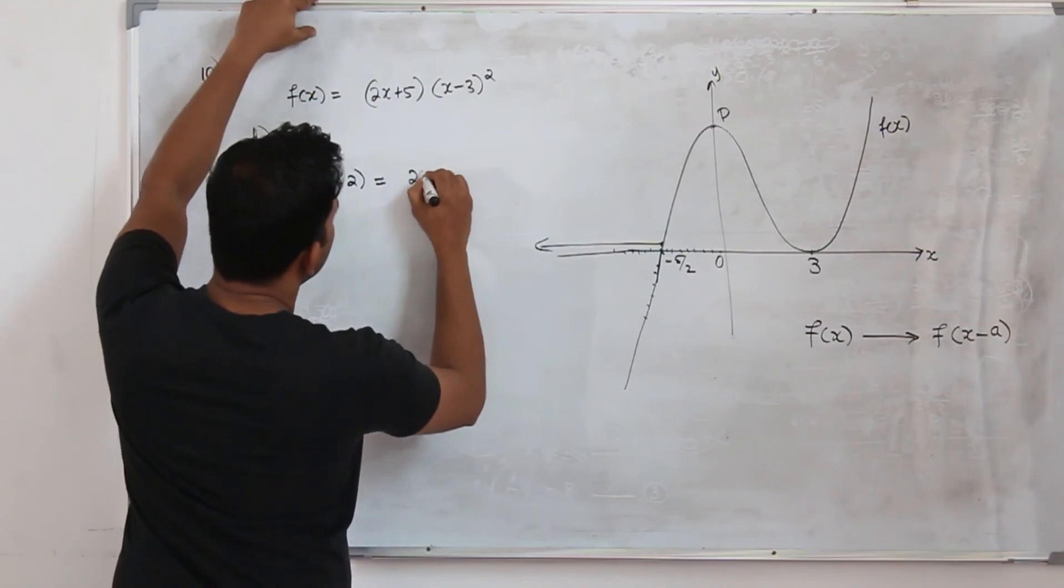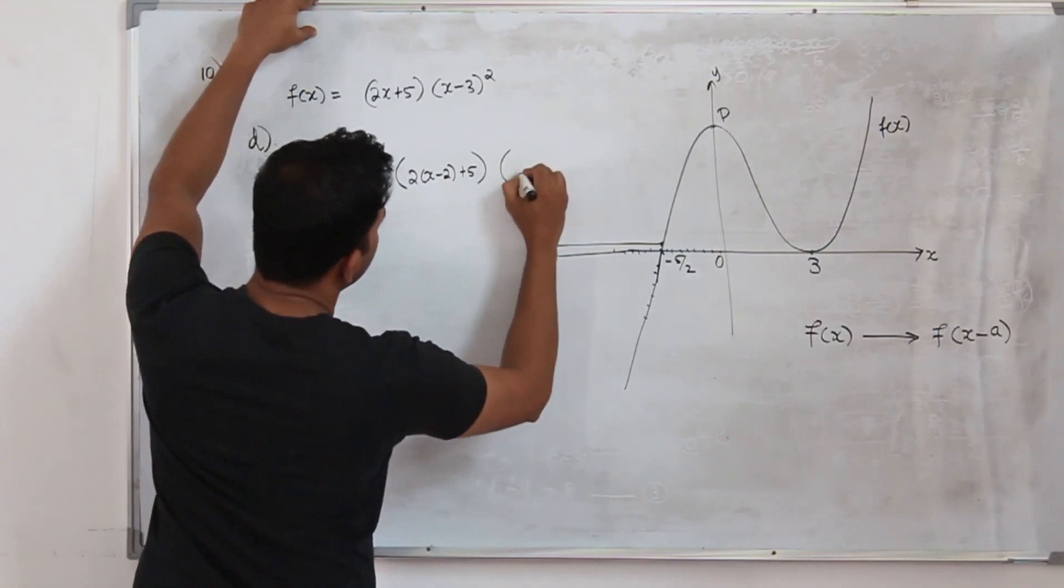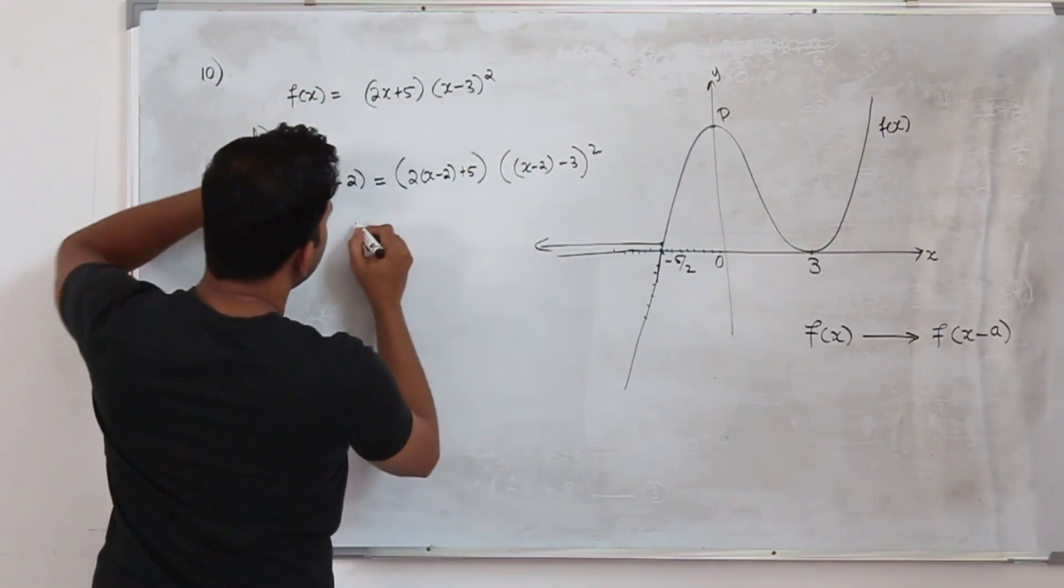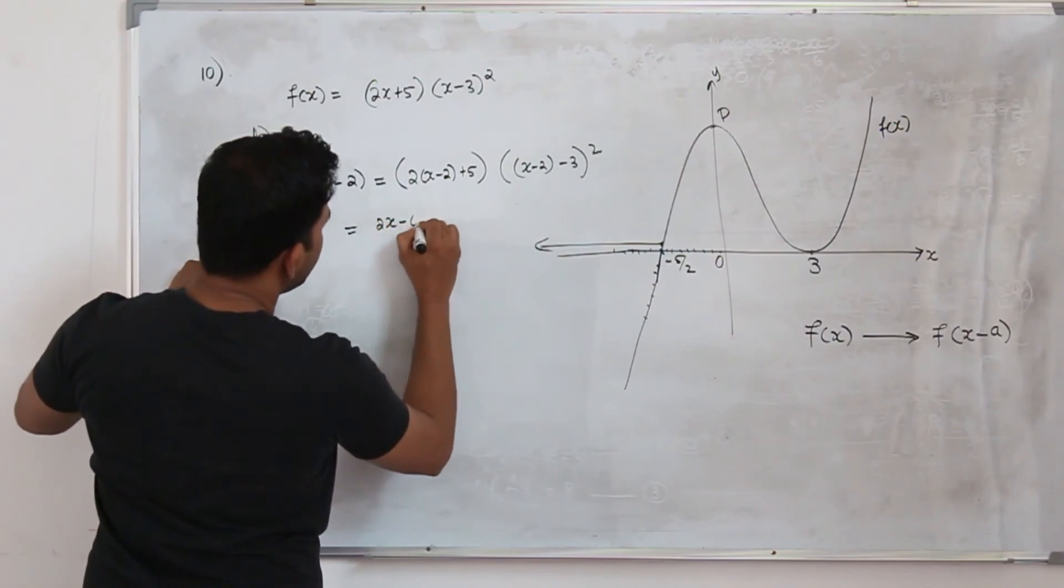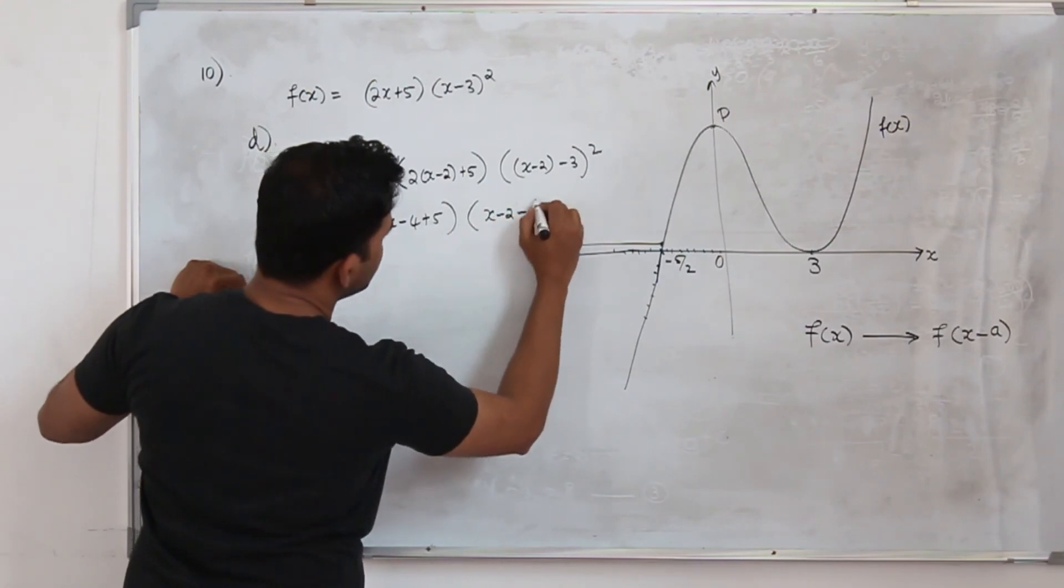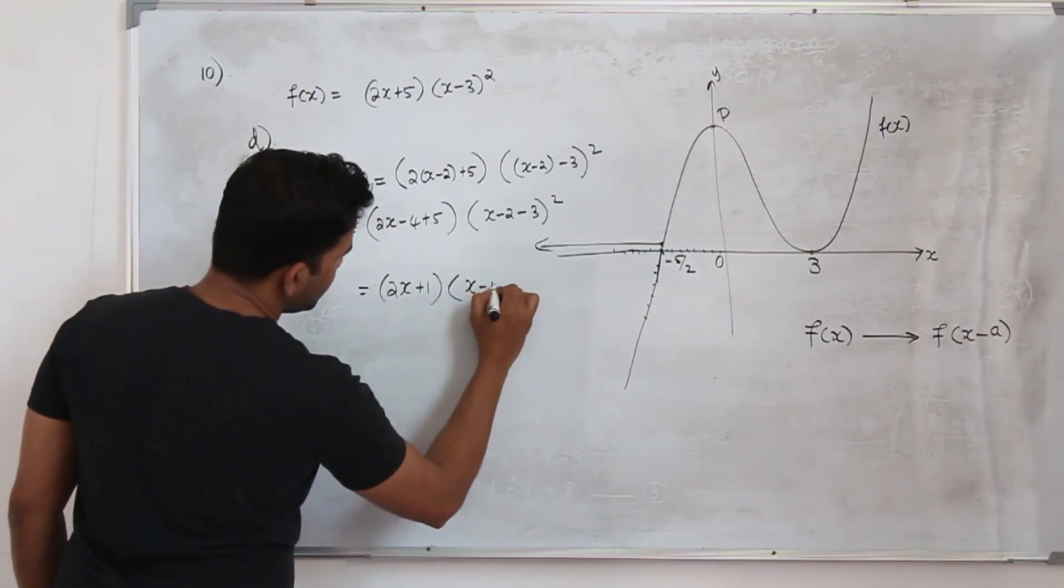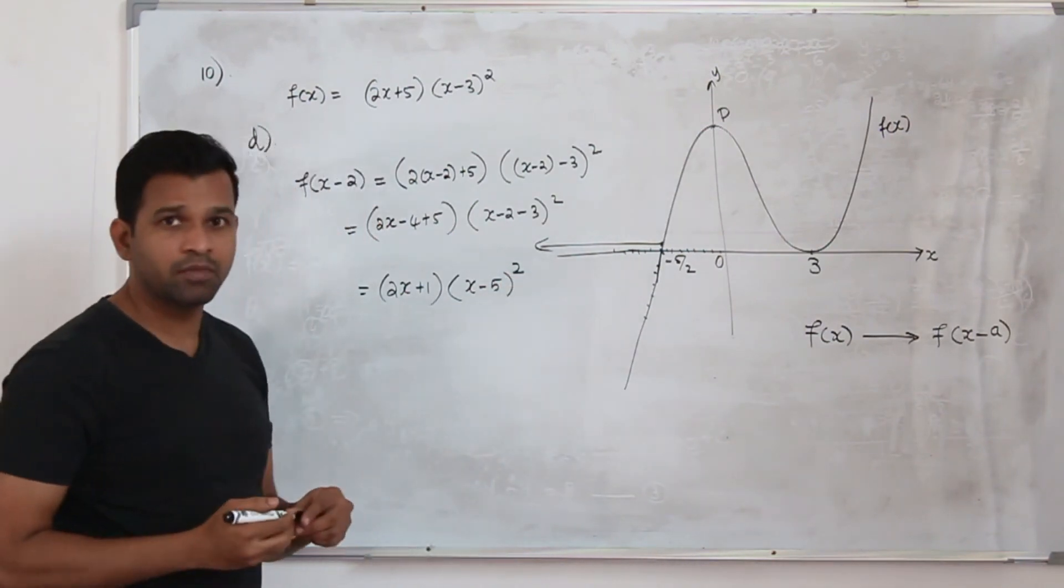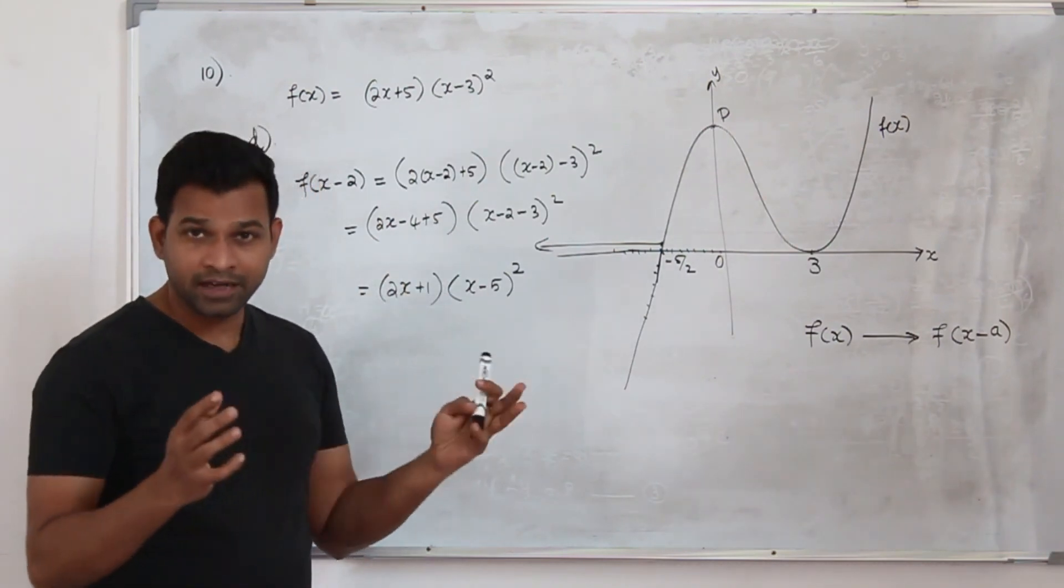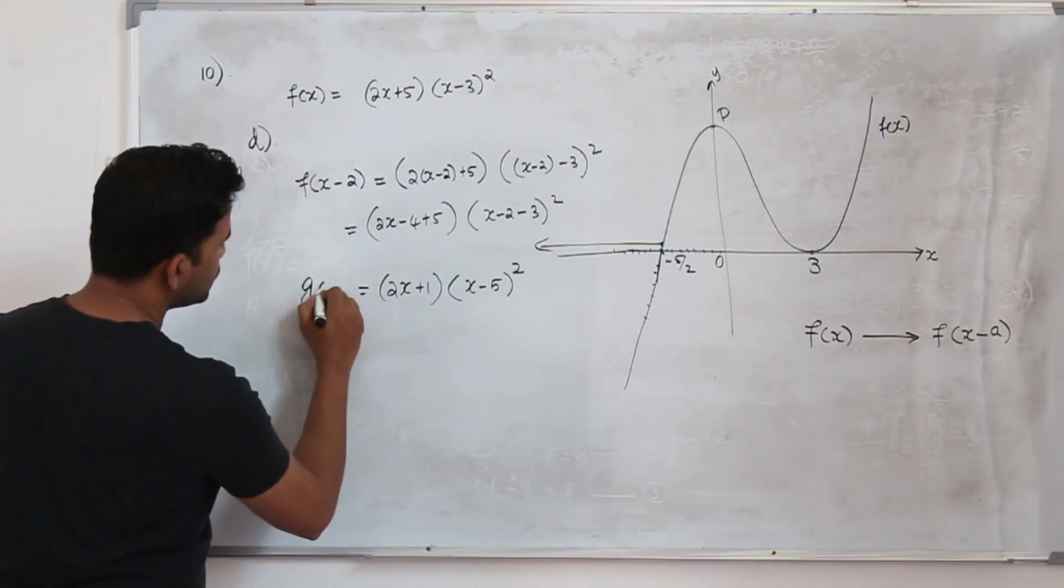In this case f(x) will become f of x minus 2 because we are translating the graph to the right side 2 units. So replace x by x minus 2 in the function. So it will become 2 into x minus 2 plus 5 and then x minus 2 minus 3 whole square. I replace x by x minus 2 and then just simplify it. It will become 2x minus 4 plus 5, here x minus 2 minus 3 whole square. So it will become 2x plus 1 into x minus 5 whole square. Do not remove the bracket because when you read the question carefully it says write the function in the factorized form. So this is our factorized form. Don't ever remove the bracket.